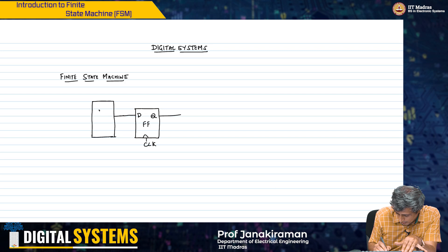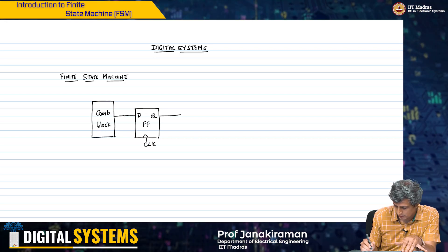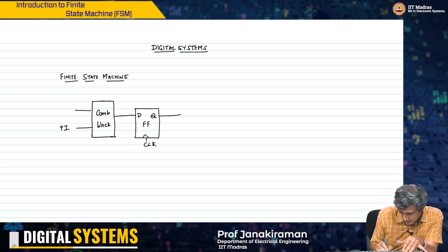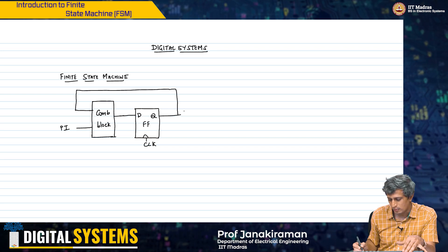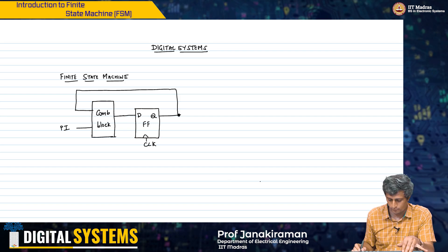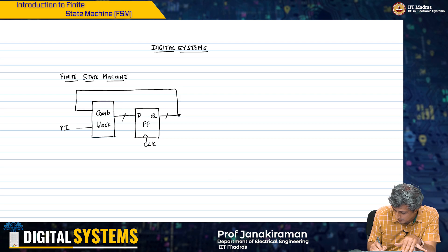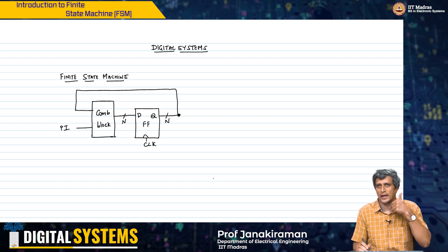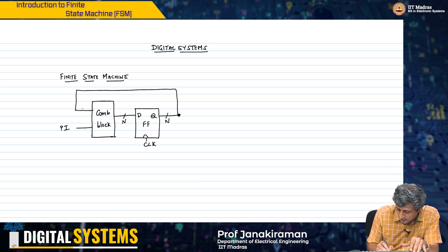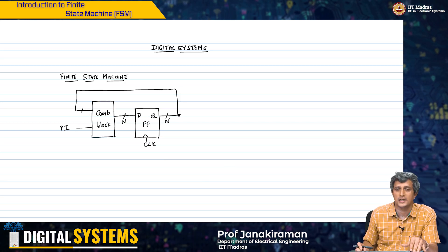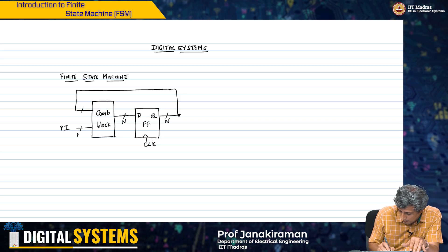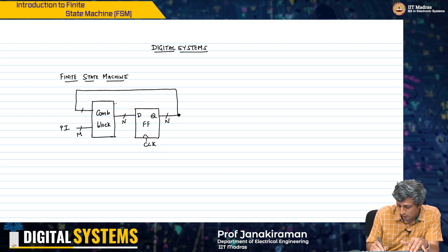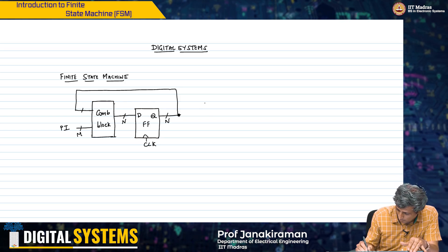Now I have some combinational block, and I have some primary inputs. Another input is going to come from the output of the flip-flops — remember, all these are multi-bit. If this is n-bit, this is also n-bit, meaning there are n D flip-flops: D1 Q1, D2 Q2, ... Dn Qn, and you have an n-bit bus that is fed back to this combinational block input.